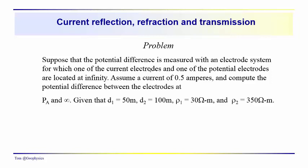The problem is that you're measuring the potential difference with an electrode system. One of the current electrodes and one of the potential electrodes are located at infinity. And you're assuming that you have a current of 0.5 amperes. And you want to compute the potential difference between the electrodes at P sub A and infinity. And you're given these different parameters, D1, D2, and so on.